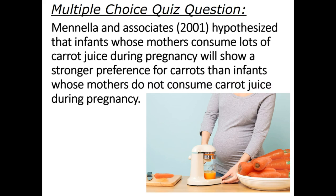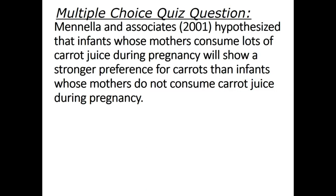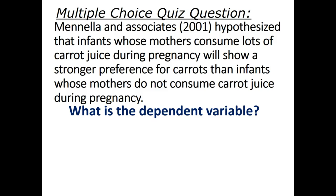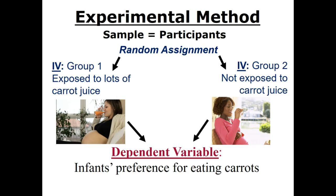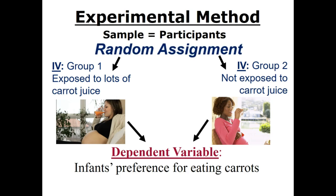Manella and associates hypothesized that infants whose mothers consume lots of carrot juice during pregnancy will show a stronger preference for carrots than infants whose mothers do not consume carrot juice during pregnancy. What is the dependent variable? Is it a) the demographics of the participants, b) type of juice consumed during pregnancy, or c) infant's food preference? The dependent variable is the infant food preference. The participants are the infants, who are randomly assigned prior to birth to either being exposed to carrot juice in their womb environment or not, based on their mother's diets. This research provides evidence that infants' food preferences are dependent on what their mothers consume during pregnancy.